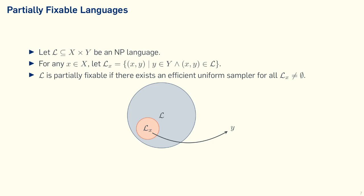We can actually define something like this — and this is exactly what we do. We define a new kind of language, which we call a partially fixable language. A partially fixable language is a subset of the Cartesian product of two sets X and Y. For any x in set X, we define a sublanguage LX consisting of all pairs in L such that x is the first component. We call a language L partially fixable if we can sample efficiently and uniformly from every non-empty LX. We call this partially fixable because we can choose X first and then let the prover choose Y.